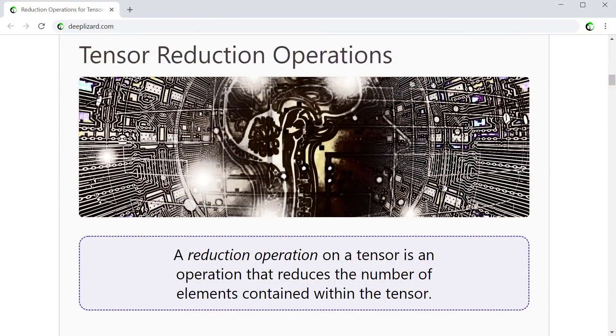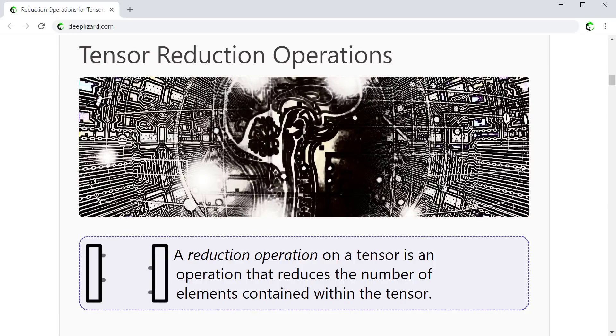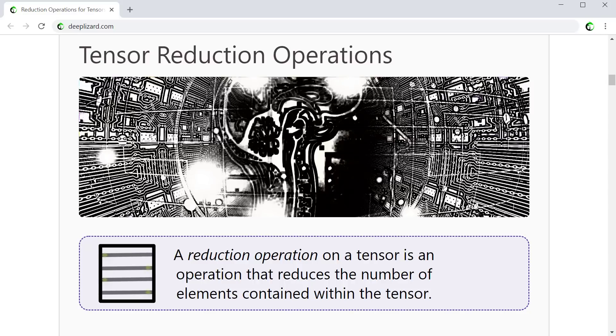Reshaping operations give us the ability to position our elements along particular axes. Element-wise operations allow us to perform operations on elements between two tensors. And reduction operations allow us to perform operations on elements within a single tensor. Let's look at an example now in code.